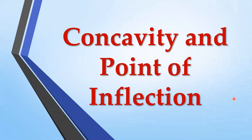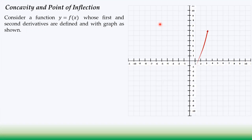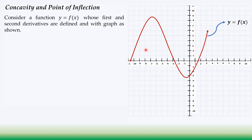We're discussing concavity and point of inflection. Consider a function y = f(x) whose first and second derivatives exist, with a graph as shown. We have three points on the curve: point A, point B, and point C.